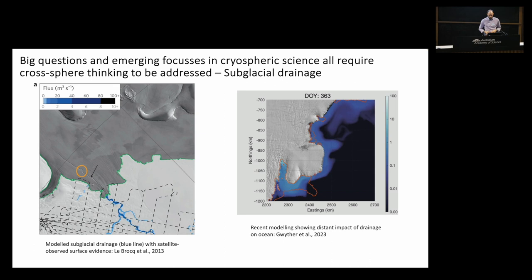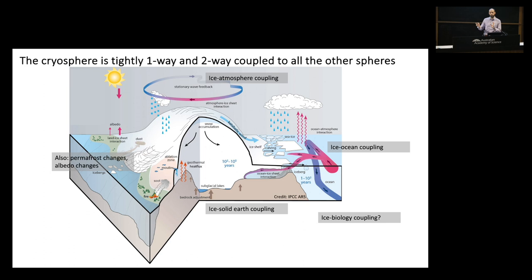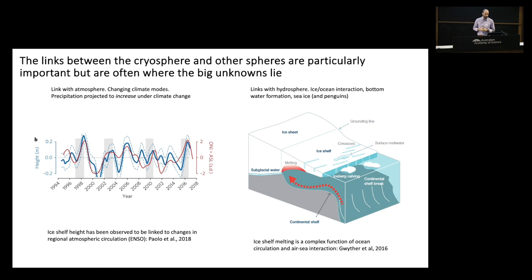The cryosphere is tightly coupled to all the other spheres. Firstly, the link with the atmosphere: Antarctica is very strongly influenced by changes in climate modes and climate change. This red line over time — a combination of ENSO plus the Amundsen Sea low pressure system — correlates well with thinning of ice shelves around Antarctica. This illustrates that the atmosphere is influencing the ocean, which is influencing the cryosphere, which in turn influences sea level rise and the biosphere.